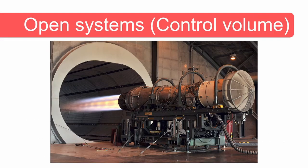Now in this video, we will begin the discussion of open systems or control volumes. In an open system, mass transfer across the system boundary takes place. Here you can see a photograph of a jet engine on a test stand. Air and fuel flow into the jet engine and the combustion products flow out of the engine at high velocity.